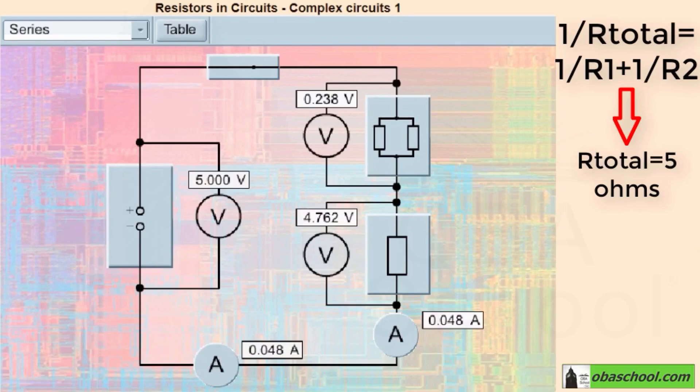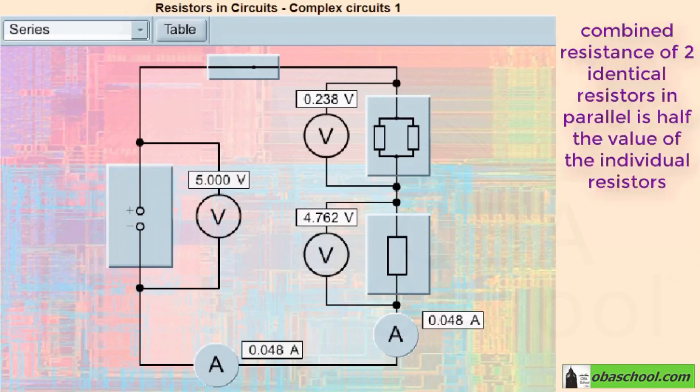This is a useful result to remember: the combined resistance of two identical resistors in parallel is half the value of the individual resistors.